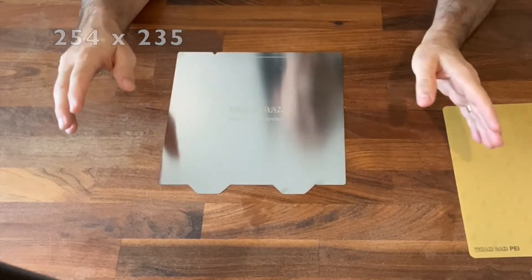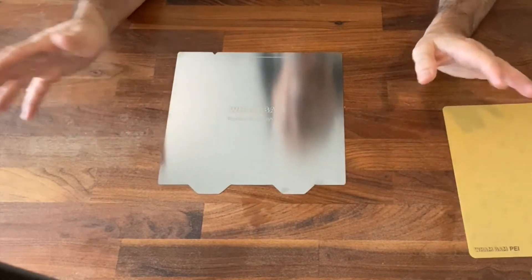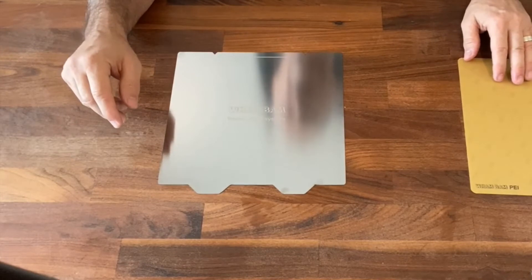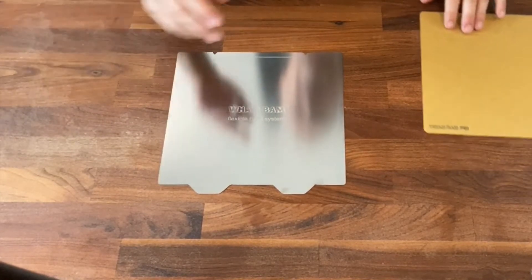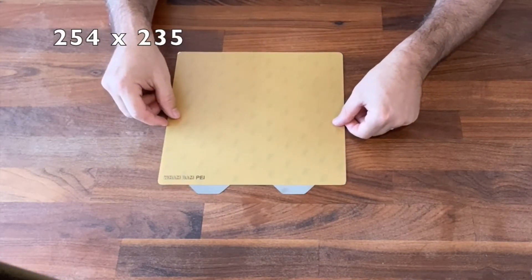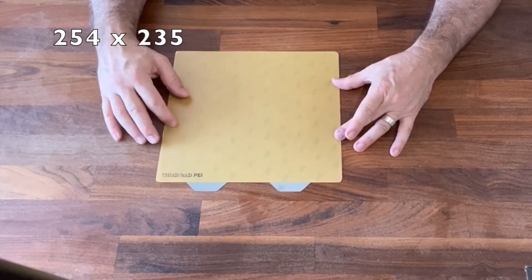For the 254x235 flexible build system by WAMBAM that was created for the Prusa machines, we have two different versions of build surface formats. One is the large one that's actually the full size 254x235.